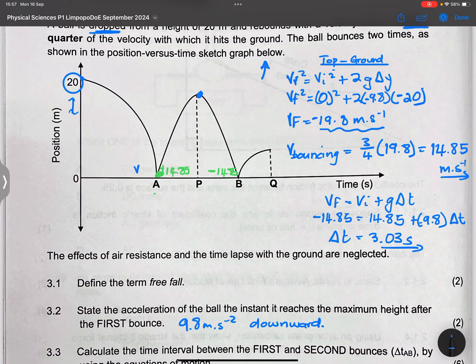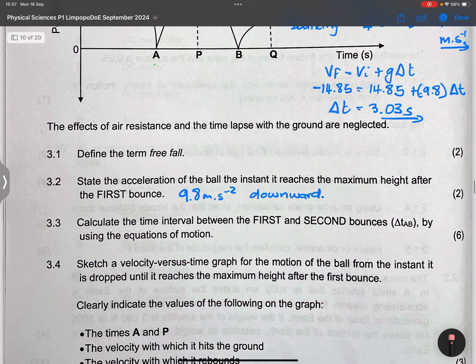Another way that you could have done it, you could have looked at from A till maximum height. The velocity is zero there. You can find the time from A till maximum height. And you know that it will be the same time from the maximum height till B. So you find out that time from A to maximum height and you multiply it by two. Please just try to do that one. So I get 3.03 seconds.